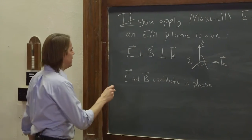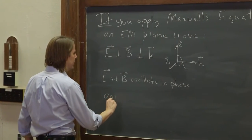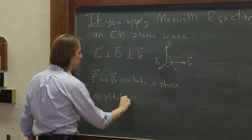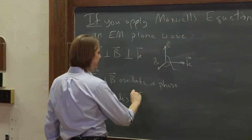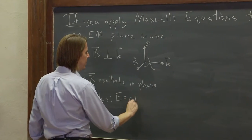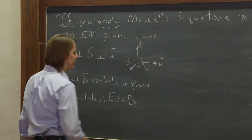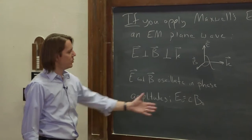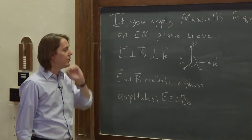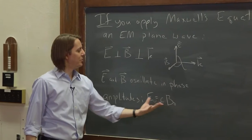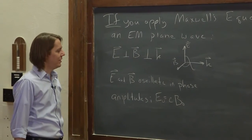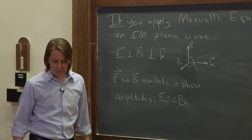And finally, the amplitudes look like this: the E field's amplitude is c, the speed of light, times the B field's amplitude. The units work out — volts per meter and Tesla, et cetera. It doesn't really mean E is bigger; it just means that's how the units work out, that the electric field equals the speed of light times B.